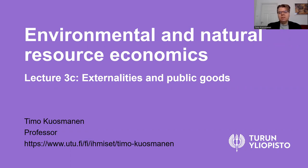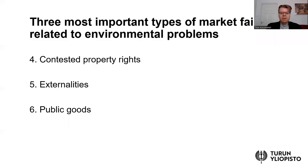In the third and final part of this discussion on welfare economics, I will dive in more detail into the types of market failures that environmental problems are associated with. In the previous lesson, we discussed the types of market failures and identified that environmental problems are often related to these three types: property rights, externalities, and public goods. Let's now take a more detailed look at each of these three types of market failures.